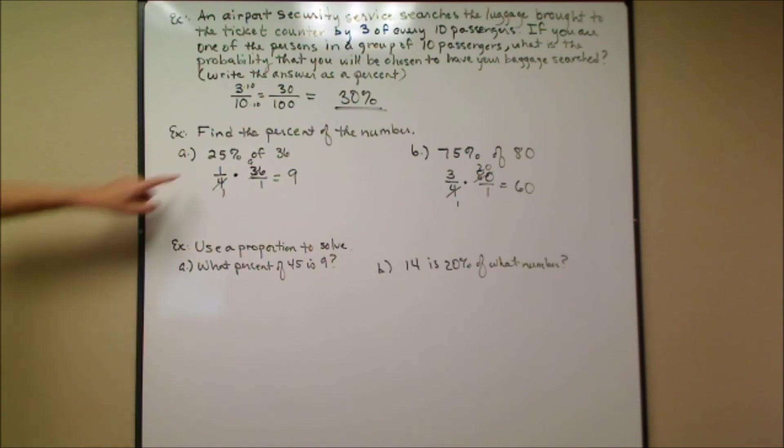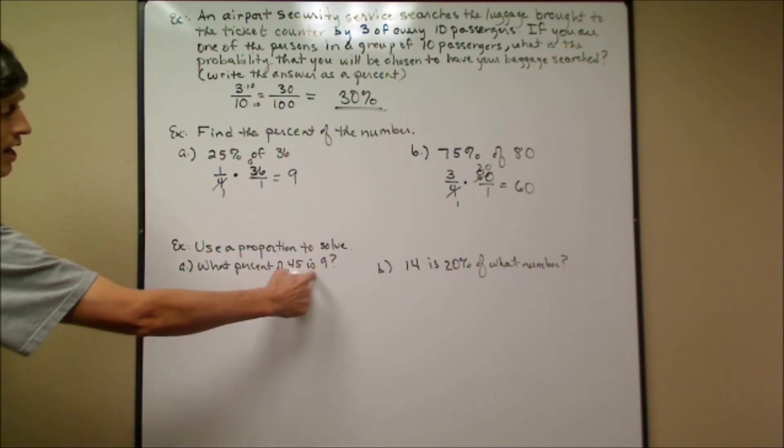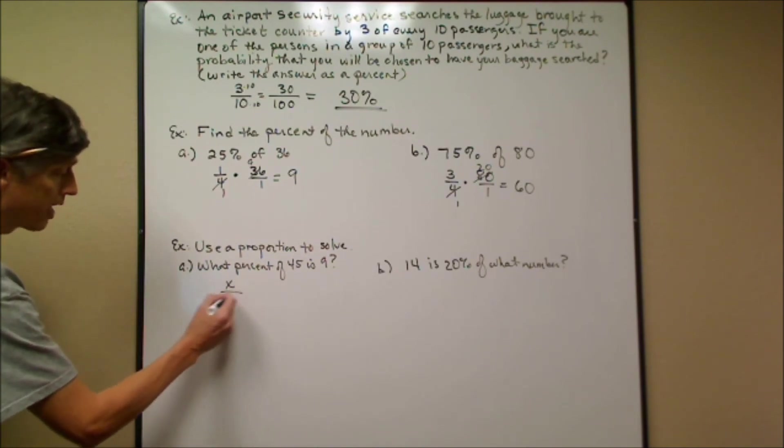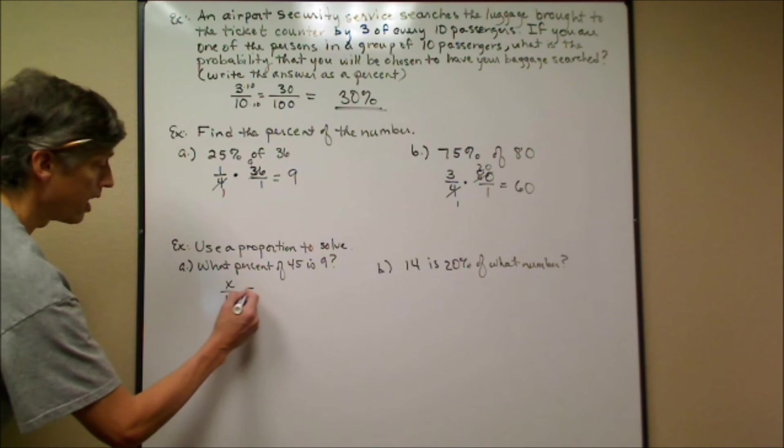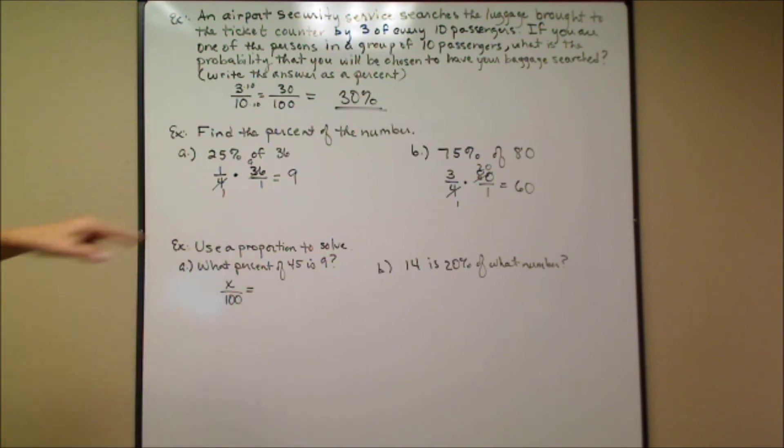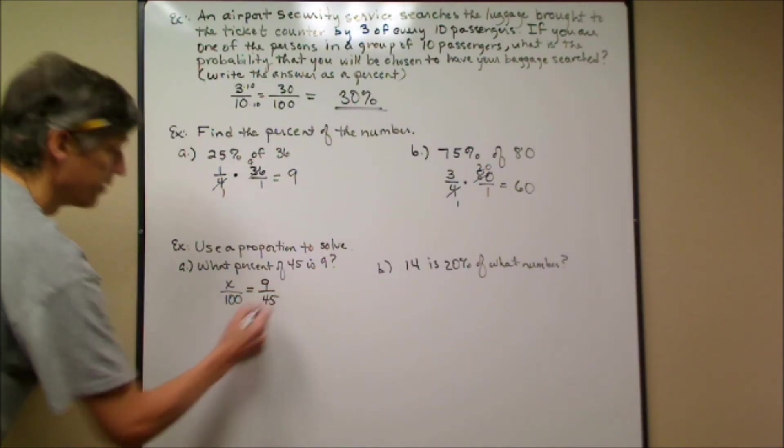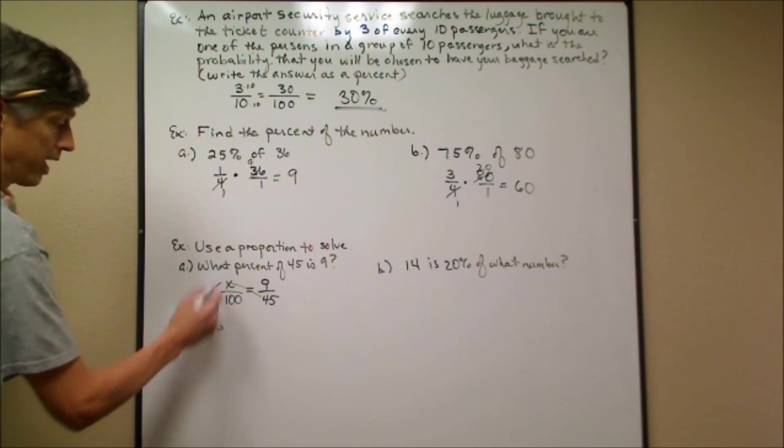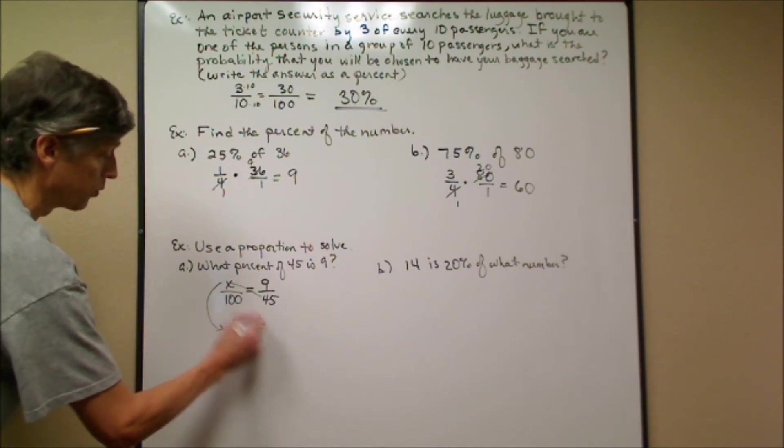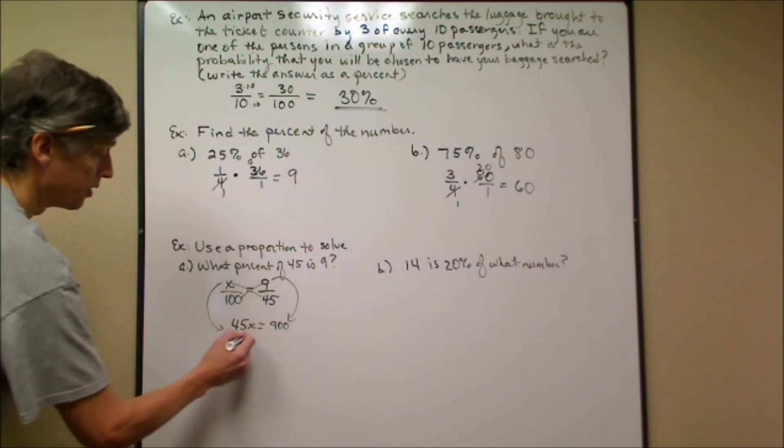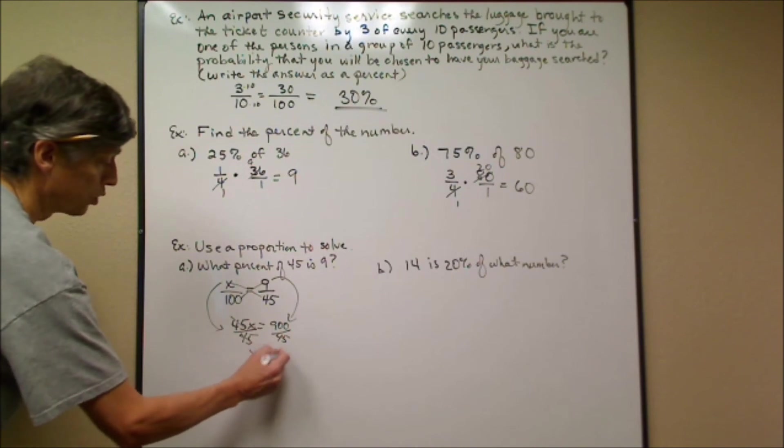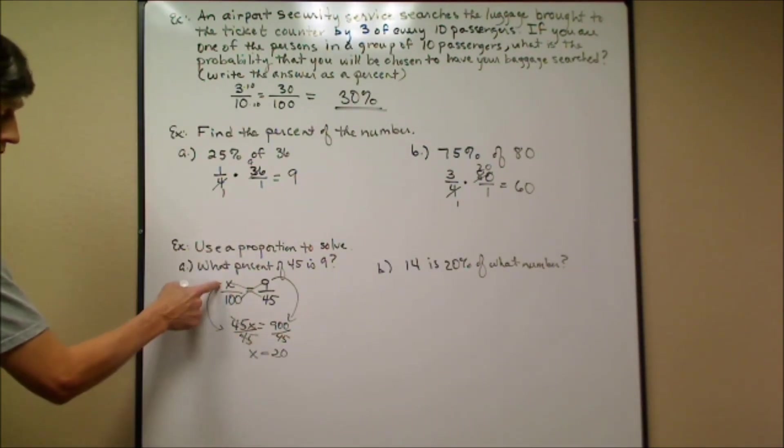Now the next couple of problems I'm going to use a proportion to set it up. Here it says, 'What percent of 45 is 9?' What percent means how many out of 100. What percent of 45 is 9—so that's 9 out of 45. So now I'm going to use a cross product, just like in the last unit. That's 45x equals 900. I'm going to divide both sides by 45, and I get x is equal to 20. So the question says 'what percent'—x is 20, so it's 20%.